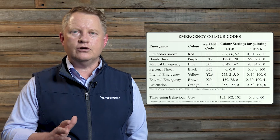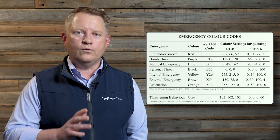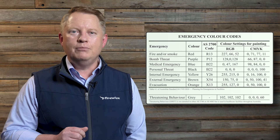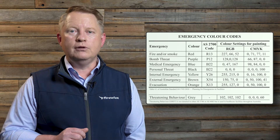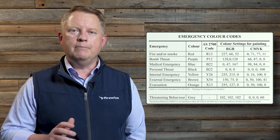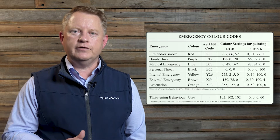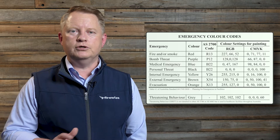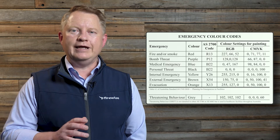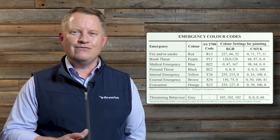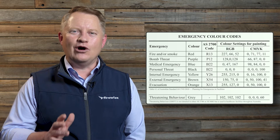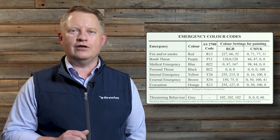These colour codes include red for fire or smoke, purple for a bomb threat, blue for a medical emergency, black for serious aggression or personal threat, yellow for an internal emergency, brown for an external emergency, and orange for an evacuation.